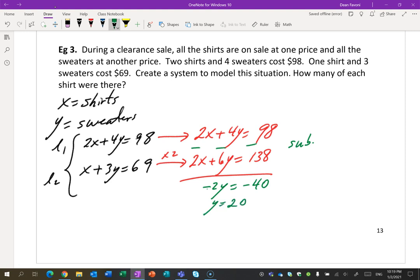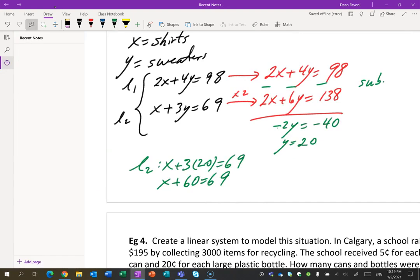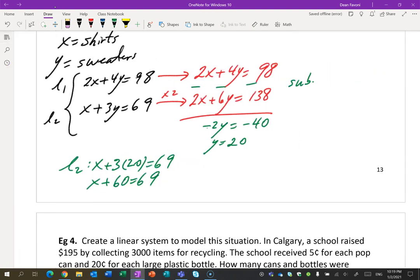And now put it anywhere you want. I'm going to go into line 2, which is X plus 3 times 20 equals 69. So X plus 60 equals 69. So then I would have sold 6 shirts and 20 sweaters. Good stuff.